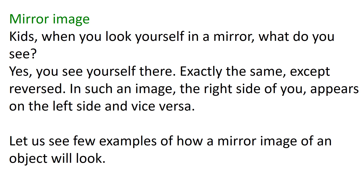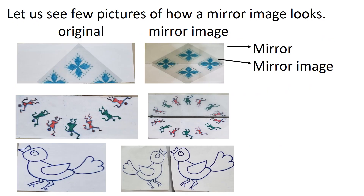Let us see a few examples of how a mirror image of an object will look. The left side pictures are all the original pictures and the right side gives the mirror image. In the first, instead of a triangle, the mirror image gives a picture in a square. Second, it is a semicircle, but the mirror image gives a shape in a circle. Third, instead of one sparrow, the mirror image gives a pair of sparrows. This is how the mirror images look.